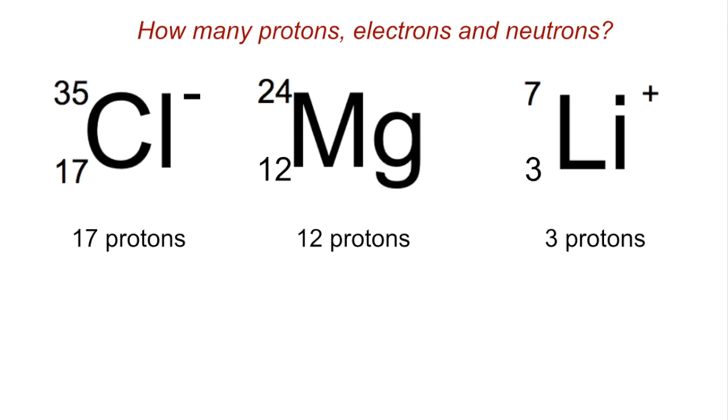Moving on to electrons now, you need to be careful and see if you've got a charge. You can see on the first one it's Cl-, so that means there's one extra electron than the atom, so it's got 18 electrons. The magnesium in the middle, that's got no overall charge, so that's going to have the same number of electrons, so 12. The lithium ion, well that's 1+, so it's lost an electron, so that's 2 electrons.